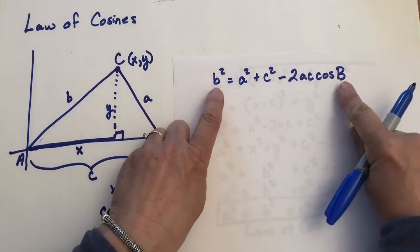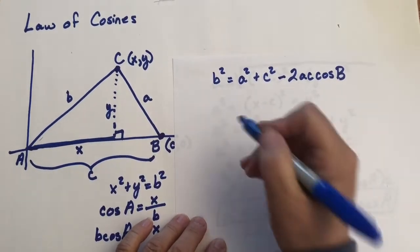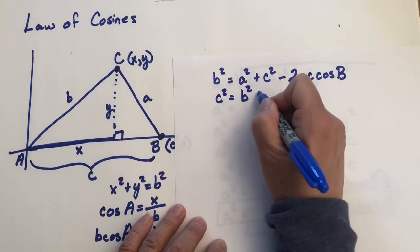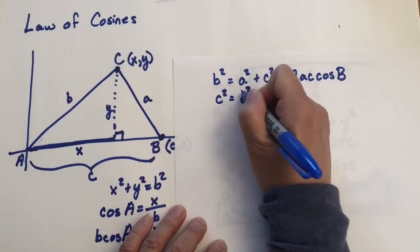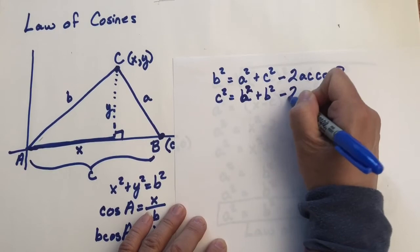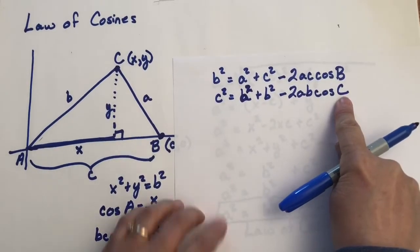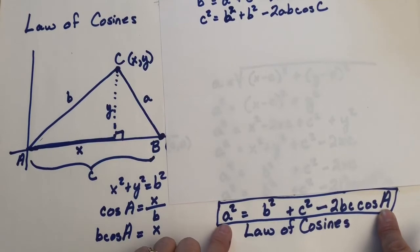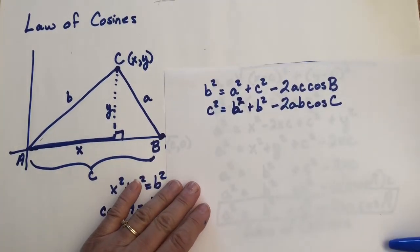And the third version is C squared equals the sum of the squares of the other two sides, A squared plus B squared minus 2AB cosine C. And again, this angle and this side are a match. Notice it was the case down here. Here was the cosine of A, and that was side A. So it really is the same formula three times.